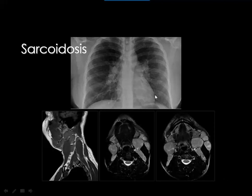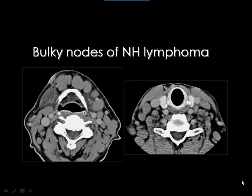This is a typical case of sarcoid showing bilateral almost symmetrical enlargement of the hilar lymph nodes. In the neck, the sarcoid nodes are homogenous without areas of breakdown, discrete and not amalgamated — these are the descriptive features of sarcoid lymphadenopathy. In contrast, lymphoma nodes are bulky, discrete, homogenously enhanced, without calcium or breakdown.